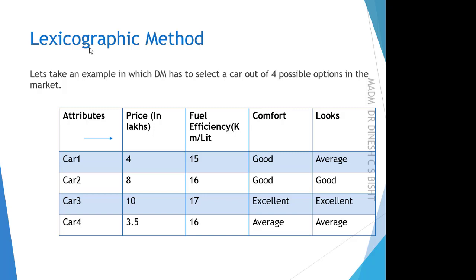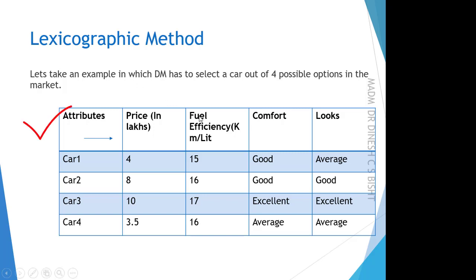To understand this method, let us consider an example in which a decision maker has to select a car out of four possible options available in the market. Those cars are named as Car 1, Car 2, Car 3, and Car 4 — these are known as options or alternatives. The attributes are price, fuel efficiency, comfort, and looks.